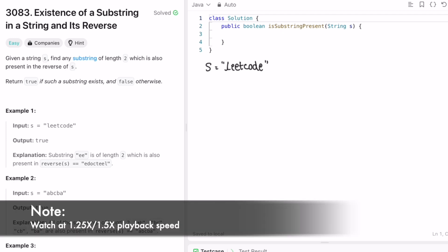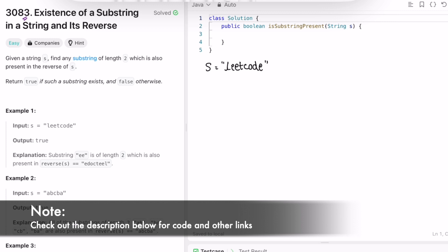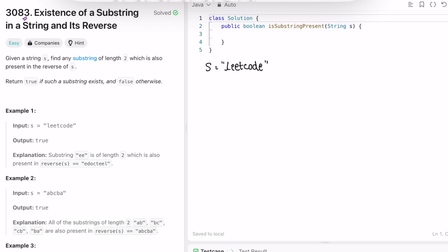Hey guys, welcome to a new video. In today's video we're going to look at a LeetCode problem. The problem's name is Existence of a Substring in a String and Its Reverse. We're given a string s and we need to find any substring of length 2 which is also present in the reverse of s. Our task is to return a boolean value, either true or false, if a substring exists satisfying this condition.